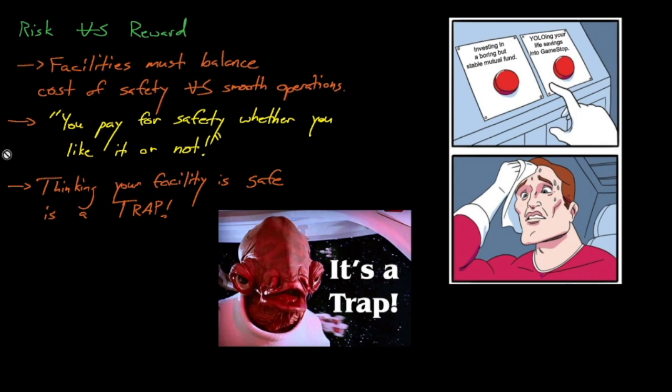This concludes the first of our nuclear criticality safety lectures. In the next lecture, we'll review the health effects that are caused by radiation during a criticality accident, and we will also review the first two fatal criticality accidents, both of which were caused by the demon core in Los Alamos.